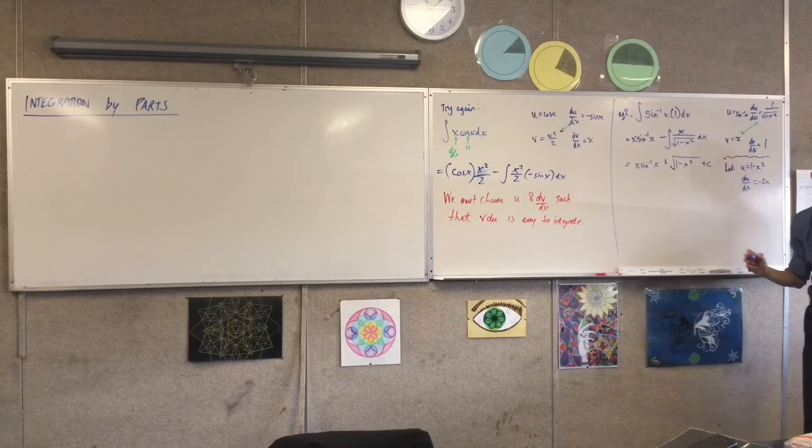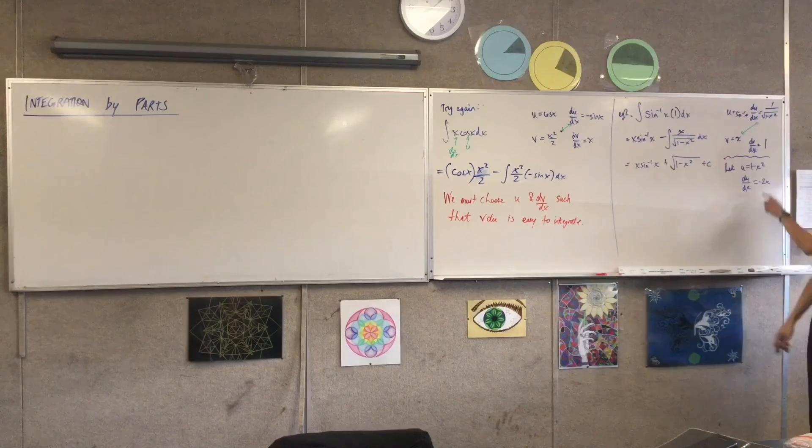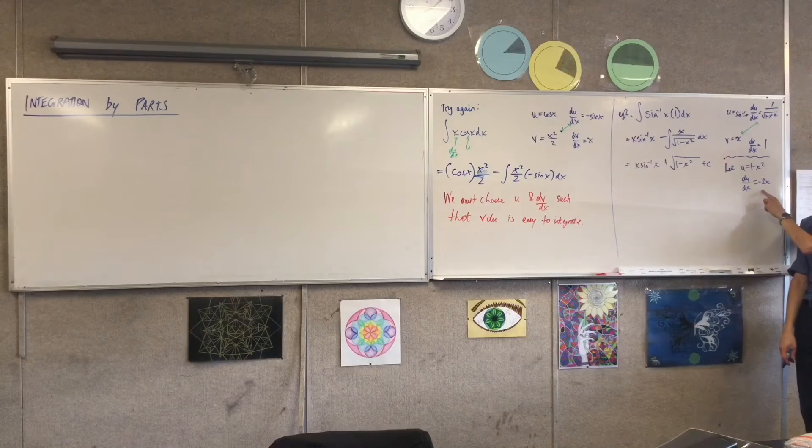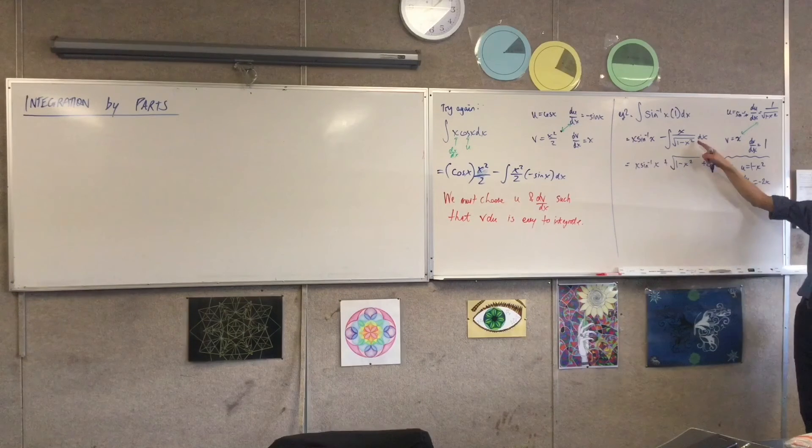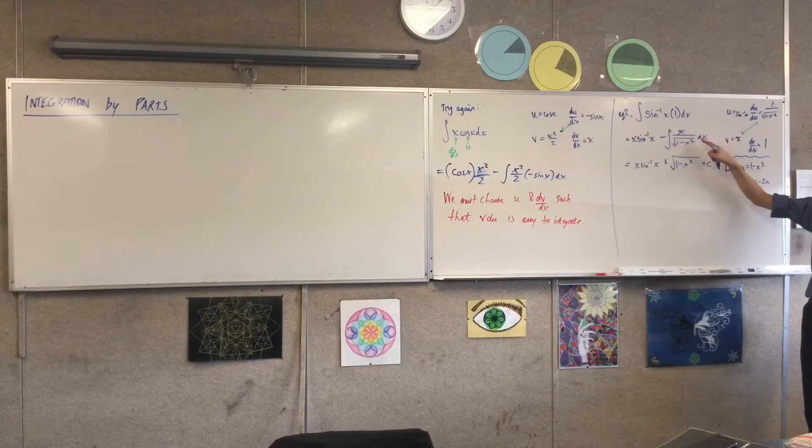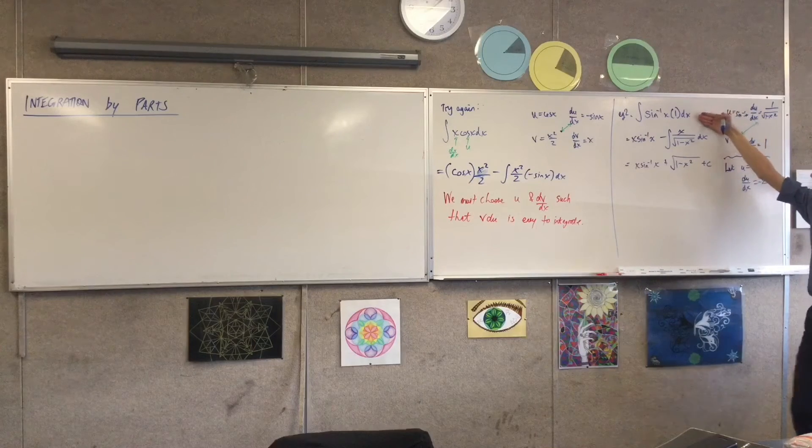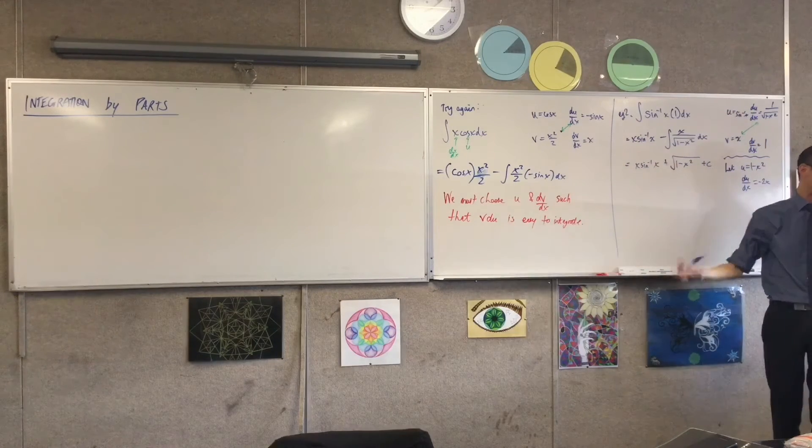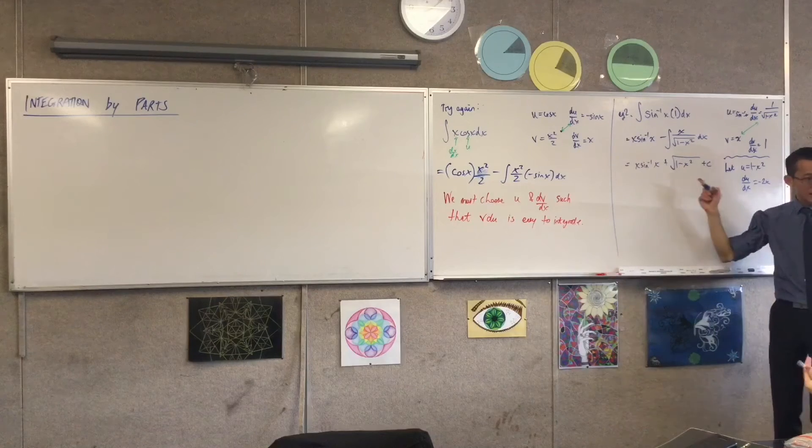Isn't it to the power of a half? No, it cancels out. Because remember, this is to the power of negative half, yeah? So then when you integrate up, it becomes the power of a half. And then you have to divide by that, so the halves cancel. Okay? So you get to this.